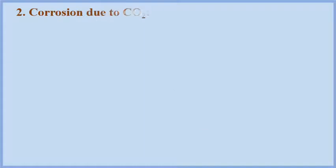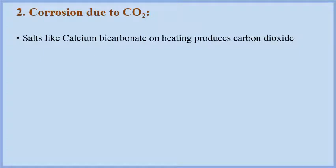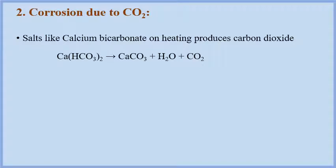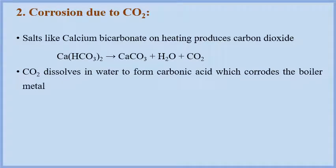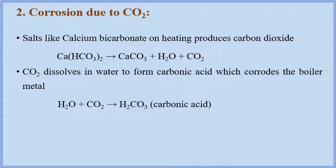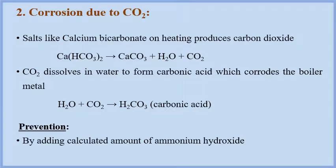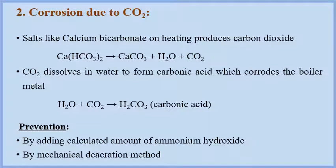The second reason for boiler corrosion is due to carbon dioxide. If boiler feed water contains dissolved salts like calcium bicarbonate, then on heating it produces carbon dioxide. This carbon dioxide dissolves in water to form carbonic acid. This acid acts as a catalyst for boiler corrosion. This type of corrosion can be prevented by adding a calculated amount of ammonium hydroxide to neutralize the carbonic acid, or by mechanical deaeration method to remove carbon dioxide.